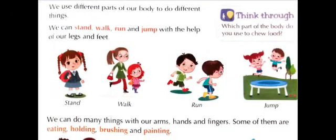We use different parts of our body to do different things. Each body part has its own function. We can stand, work, run, and jump with the help of our legs and feet. We have two legs and feet which help us to stand, work, run, jump, and so on. You can see the pictures here.